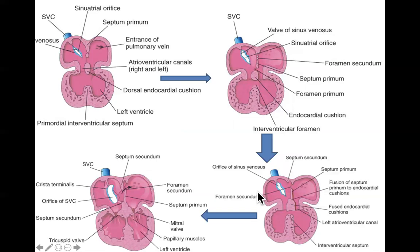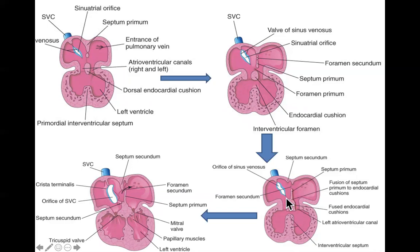What we're looking at here is a coronal section of the heart with the front removed - we're looking at the front of the heart with the front sliced off. This shows the heart at 28 days, 32 days, 35 days, and then an eight-week heart.